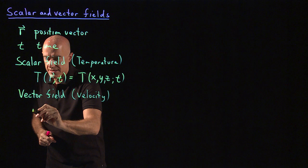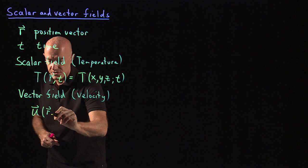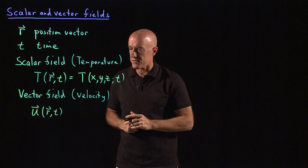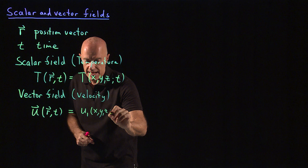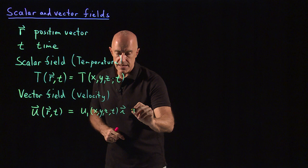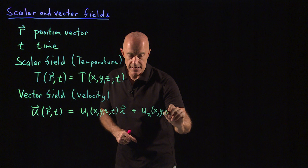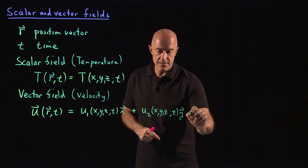So we write the vector field as u, which is now a vector at the point in space denoted by r at time t. So again, we've defined the coordinate system. And then this is a vector. So it has a first component of velocity, which is at x, y, z, and at time t in the i direction, plus a second component of velocity at x, y, z, and t in the j direction.